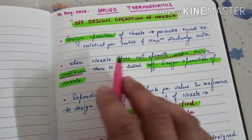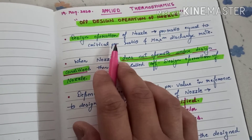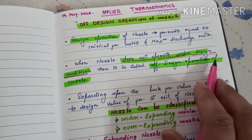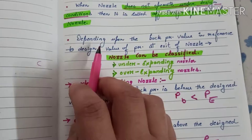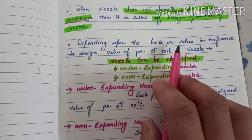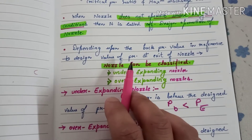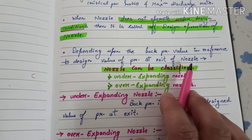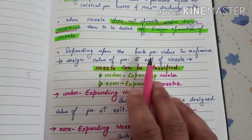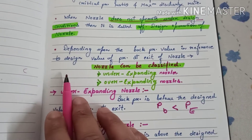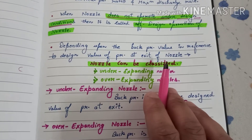When the nozzle does not operate under these design conditions, it is called the off-design operation of the nozzle. Depending upon the back pressure value in reference to the design value of pressure at the exit of the nozzle, we are considering two pressure values: the back pressure value and the value of pressure at the exit of the nozzle.